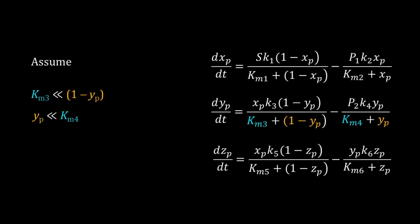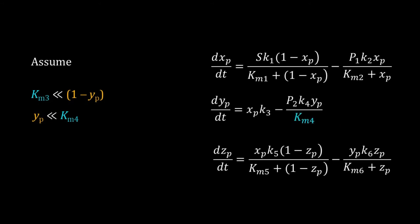Assume km3, the Michaelis-Menten constant, is very less than 1 minus yp, and yp is also very less than km4. So we can get rid of km3 and yp in the denominators. By doing a bit of algebra, we get this reduced ODE for yp.